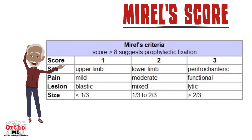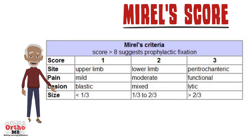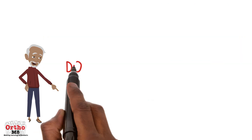This creates a table and each component is given a score out of three. These are added together and a score above eight suggests prophylactic fixation.